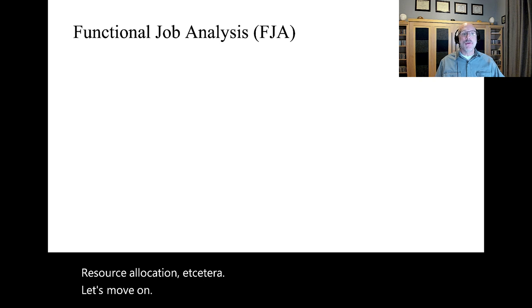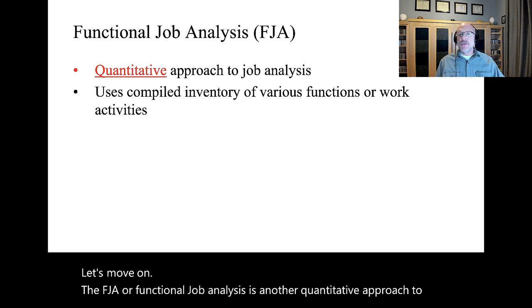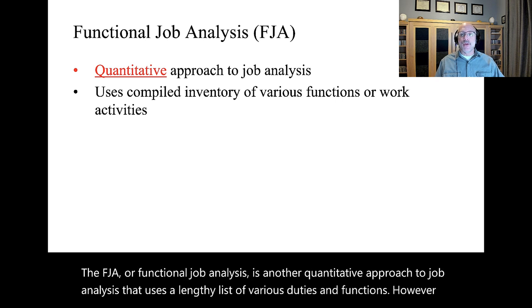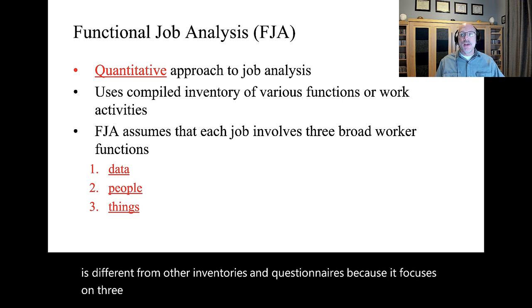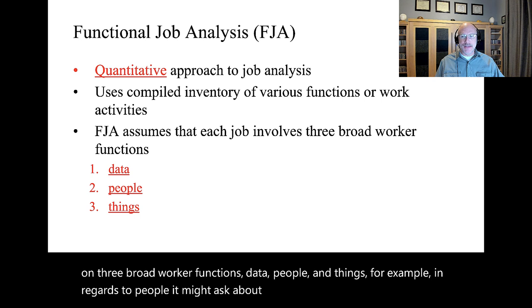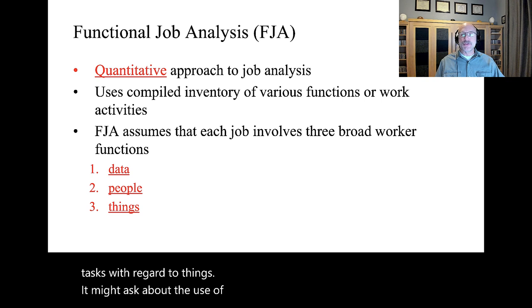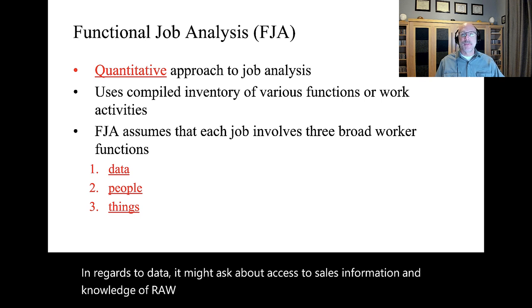The FJA, or Functional Job Analysis, is another quantitative approach to job analysis that uses a lengthy list of various duties and functions. However, it is different from other inventories and questionnaires because it focuses on three broad worker functions: data, people, and things. For example, in regards to people, it might ask about coordinating and communicating tasks. With regard to things, it might ask about the use of tools and paperwork completion. In regards to data, it might ask about access to sales information and knowledge of raw materials prices.